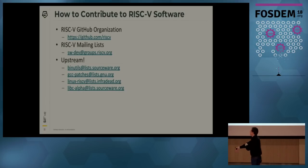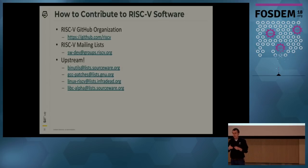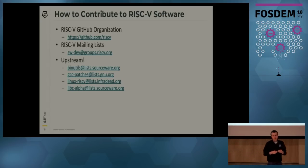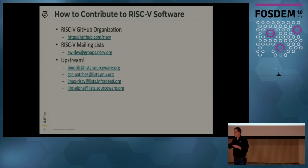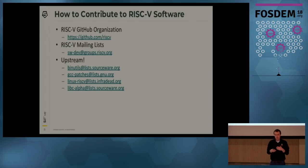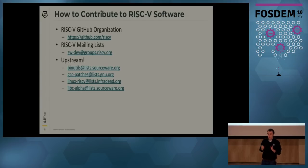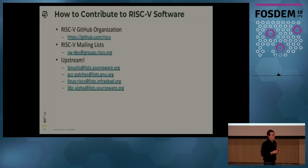For the last few years we've been maintaining forks of all these projects in our own GitHub organization at github.com/riscv. There's also a RISC-V mailing list you can go to contribute. But now that we're upstream, development is moving largely to the official repositories — you can go to the binutils mailing list or the Linux mailing lists and contribute to the RISC-V port just like any other project. We're really excited to have people start contributing, so please pick your favorite project and start working on it.